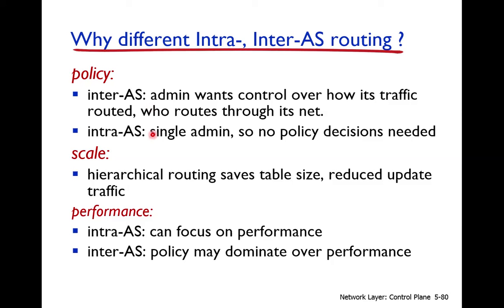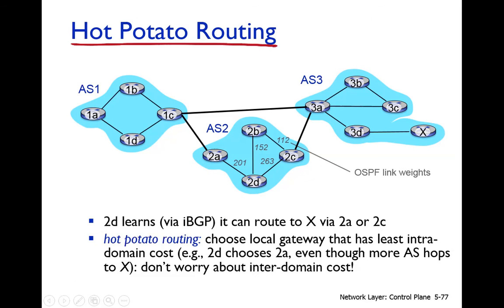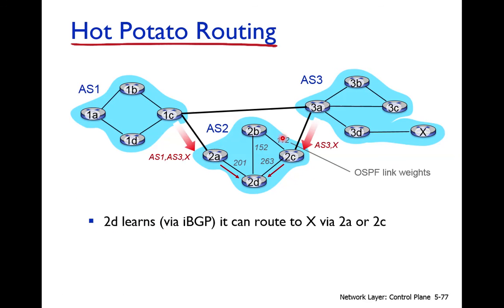This autonomous system approach is called hierarchical routing. It saves the forwarding table size. For example, if network X has 1000 routers and 1000 IP addresses, these 1000 addresses are all represented by a single entry — autonomous system 3. So instead of 1000 entries, just one entry is needed, which reduces the table size and improves performance.